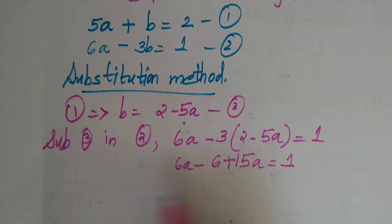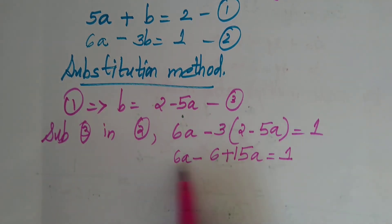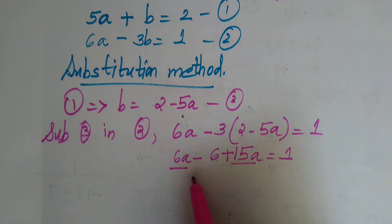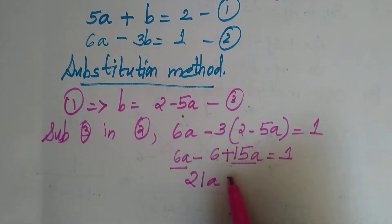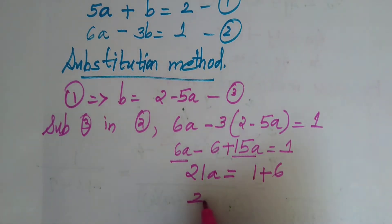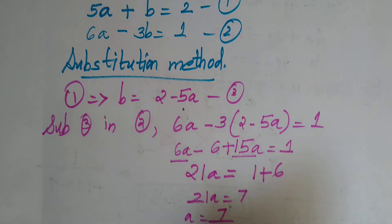After applying the substitution and using elimination — add and apply the same sign — we get 21a = 7. Therefore a = 7/21, which equals 1/3.